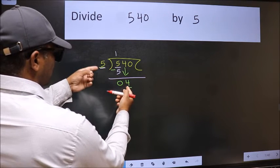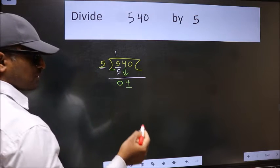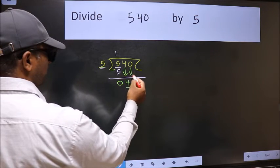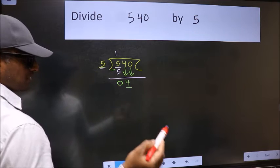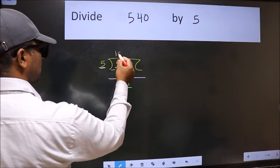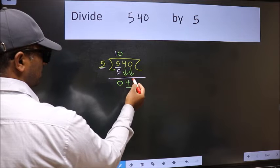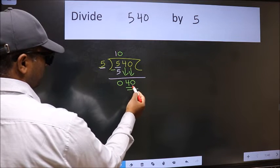4 is smaller than 5, so we should bring down the second number. And the rule to bring down the second number is we should put 0 here. Then only we can bring this number down. Now 40.